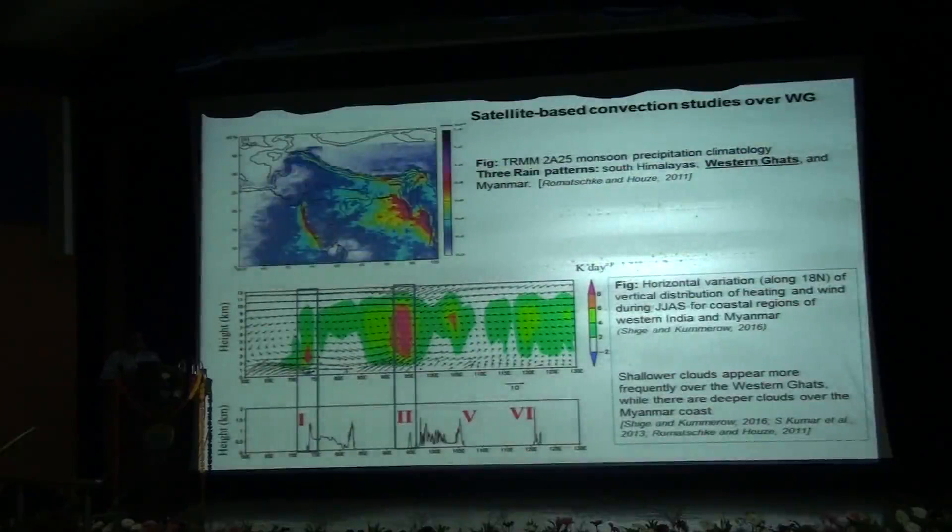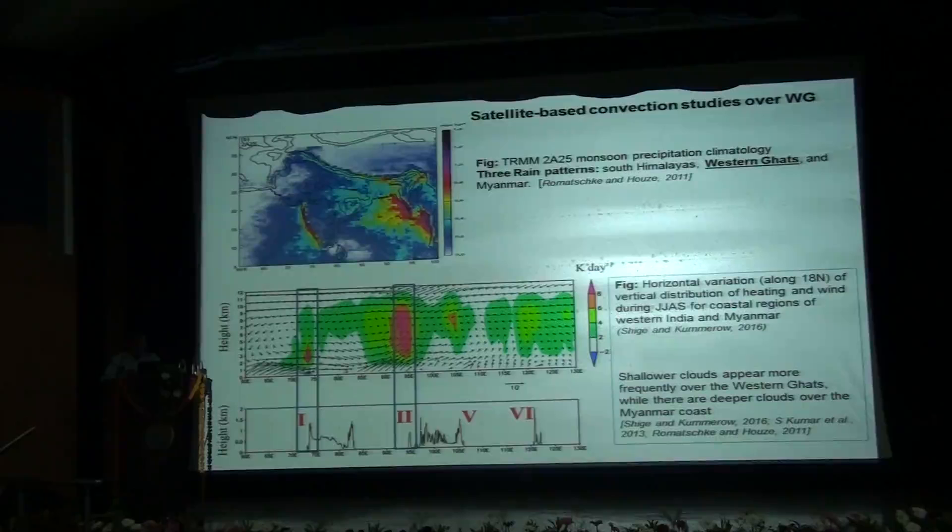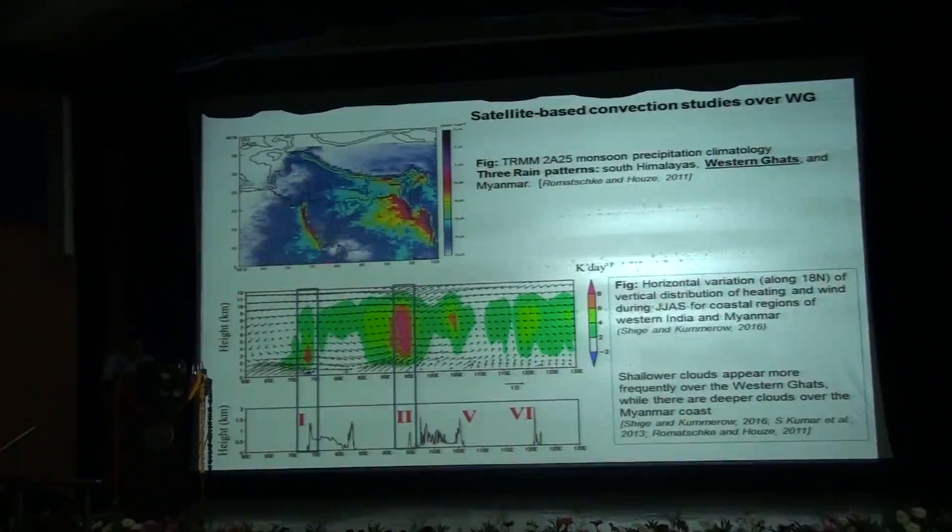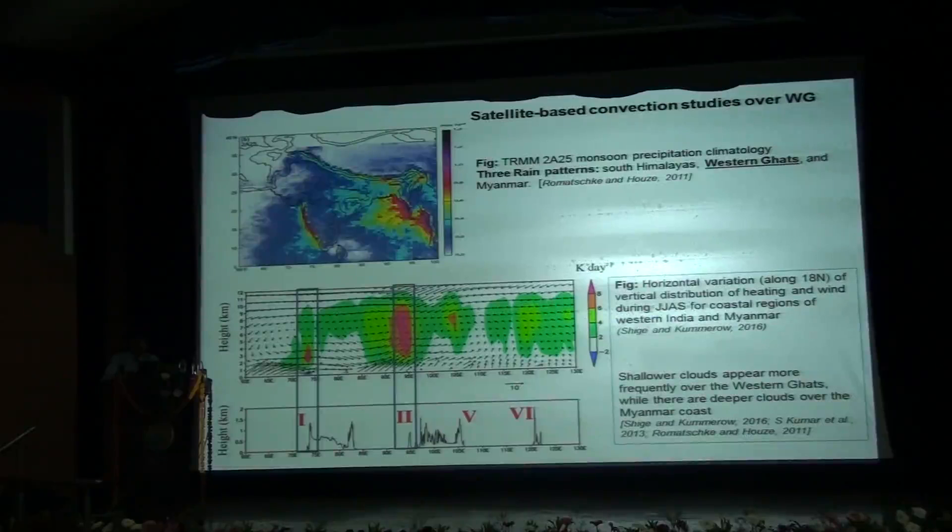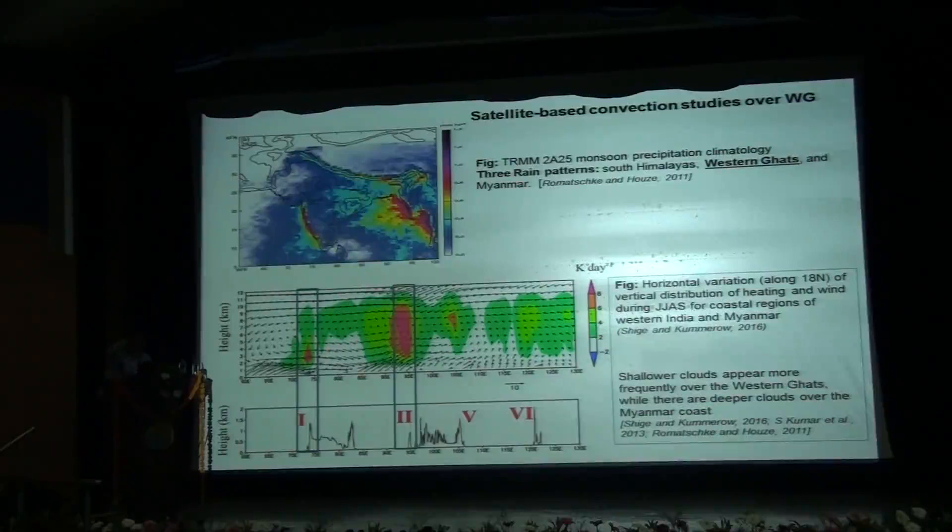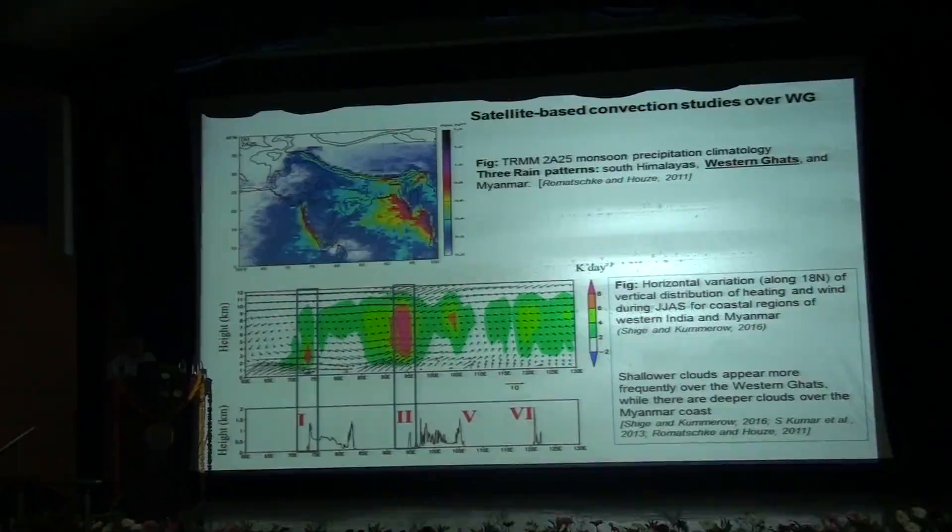Now I shall be speaking about some of the satellite studies that have been conducted over the western ghats. Figure to the left has been discussed several times today. This is research from Ravatskyan house who found the monsoon precipitation climatology using TRMM 2A25 datasets showing three main regions of rain patterns over the western ghats, the southern Himalayas and the Myanmar coast. This figure shows the horizontal variation of the vertical distribution of heating and wind during the monsoon over the western ghats and the Myanmar coast. The bottom panel shows the topography of the region along 18 degrees north. The colors indicate heating and arrows indicate winds. We see shallow heating dominant at lower levels over the western ghats and the heating structure is deep over Myanmar coast, which translates to shallow cloud systems over the western ghats and deeper cloud systems over the Myanmar coast.